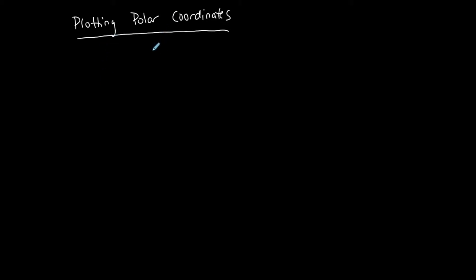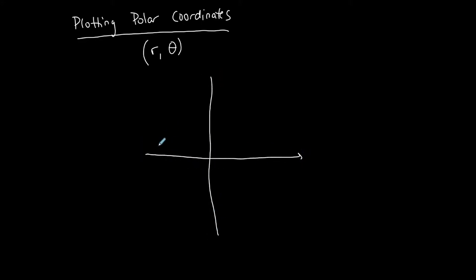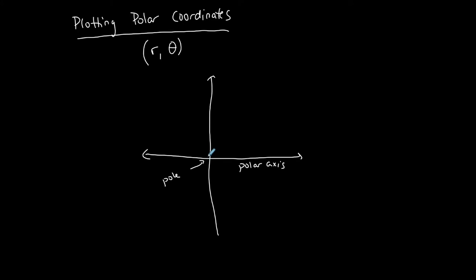A polar coordinate is basically an r and a theta — instead of an x and a y, it's an r and theta. Instead of an x-axis and a y-axis, you have what's called the polar axis. Instead of the origin, this is called the pole. We're always moving away from the pole and around the polar axis.